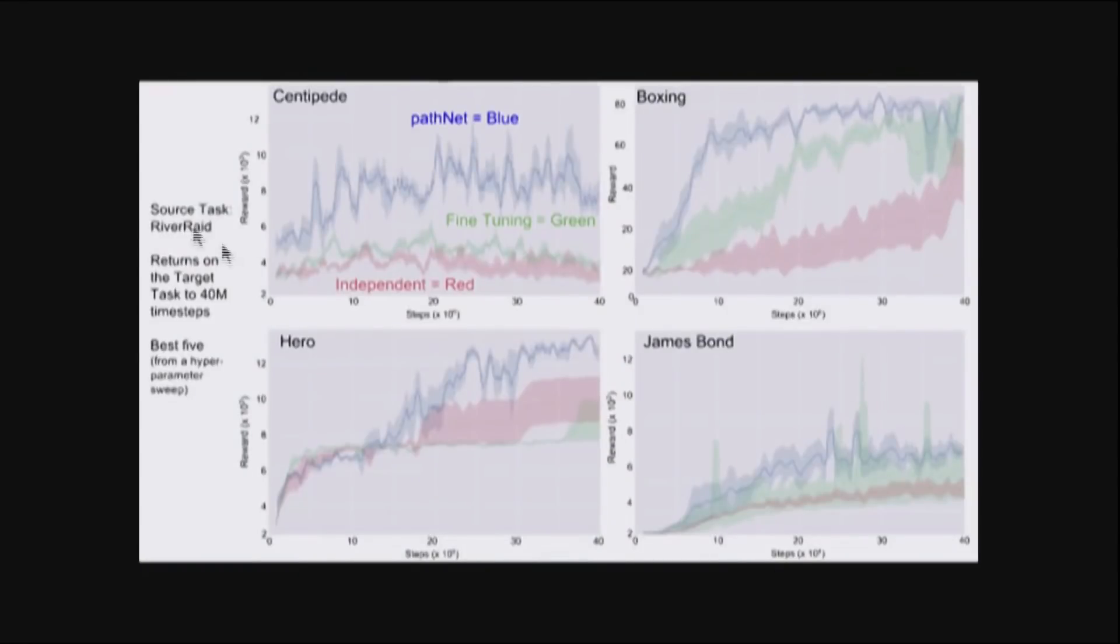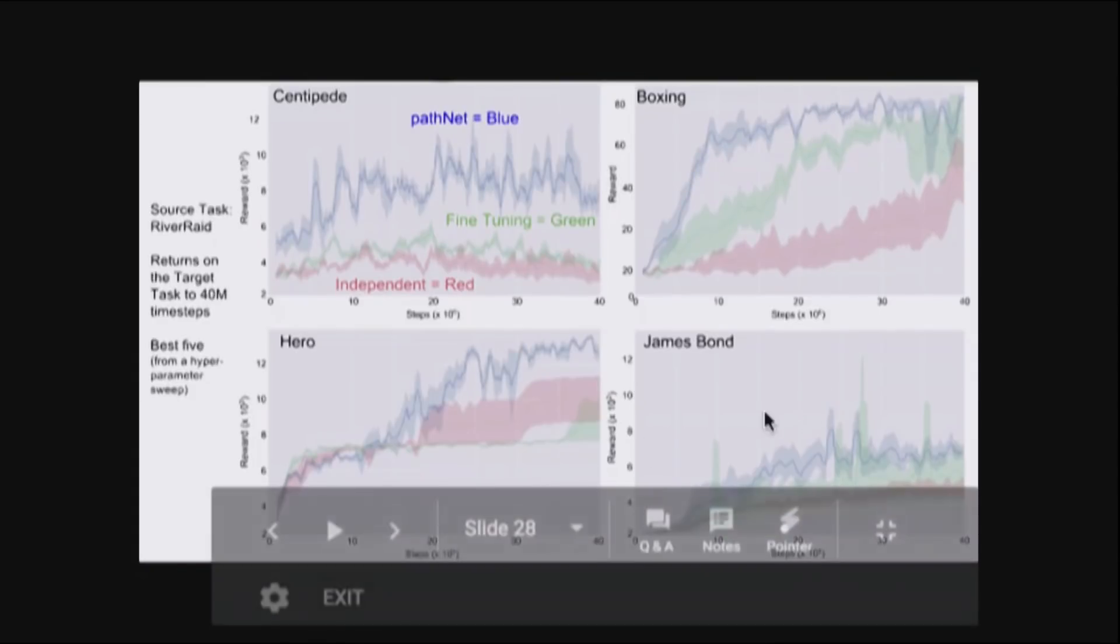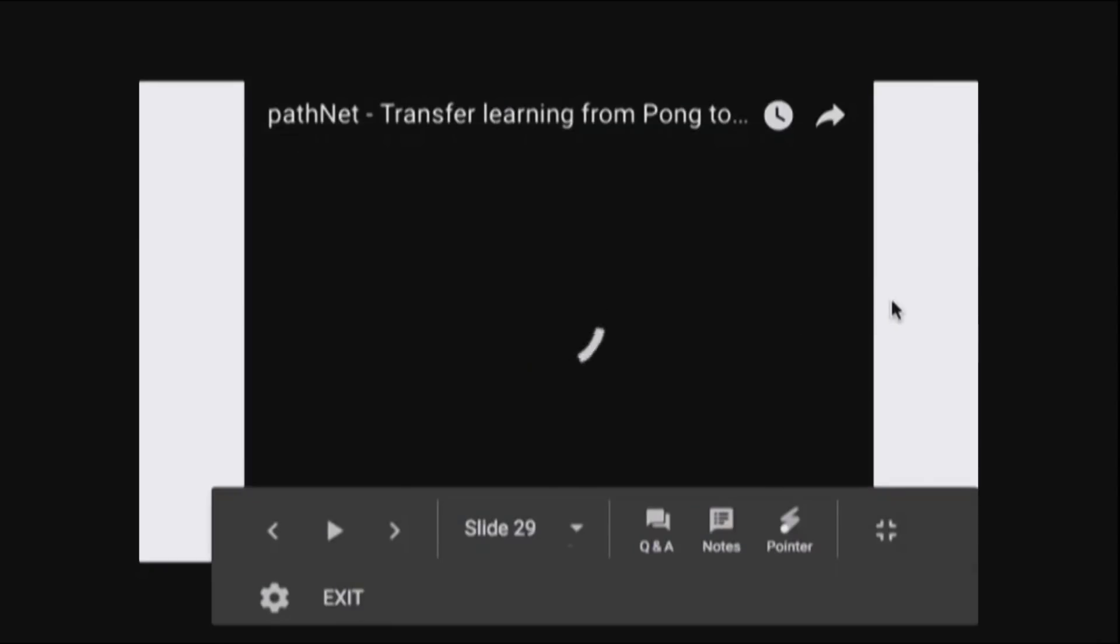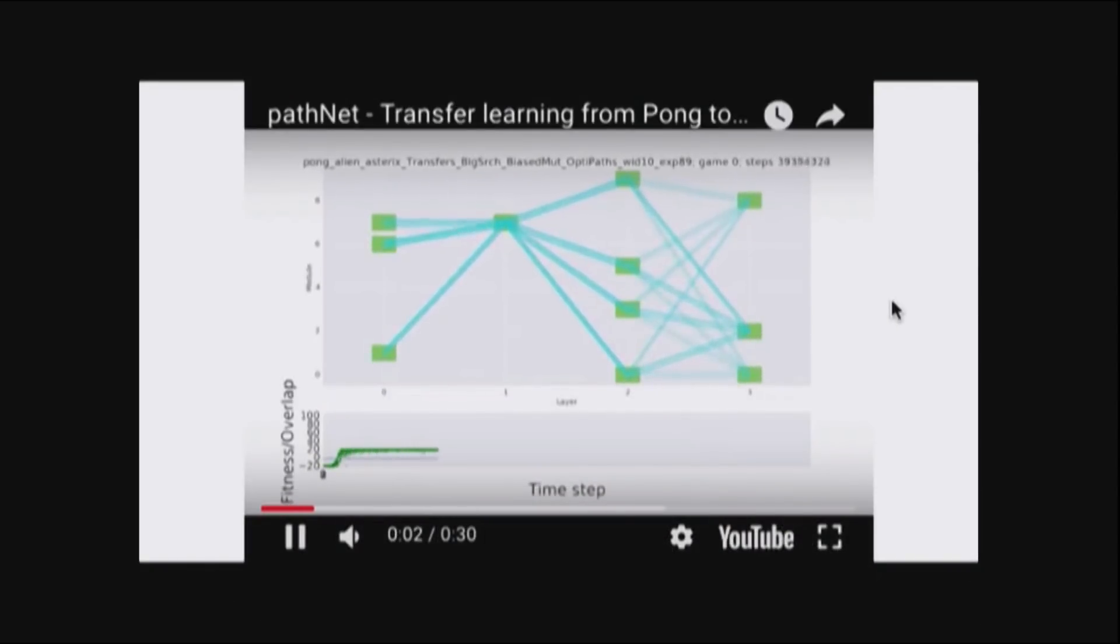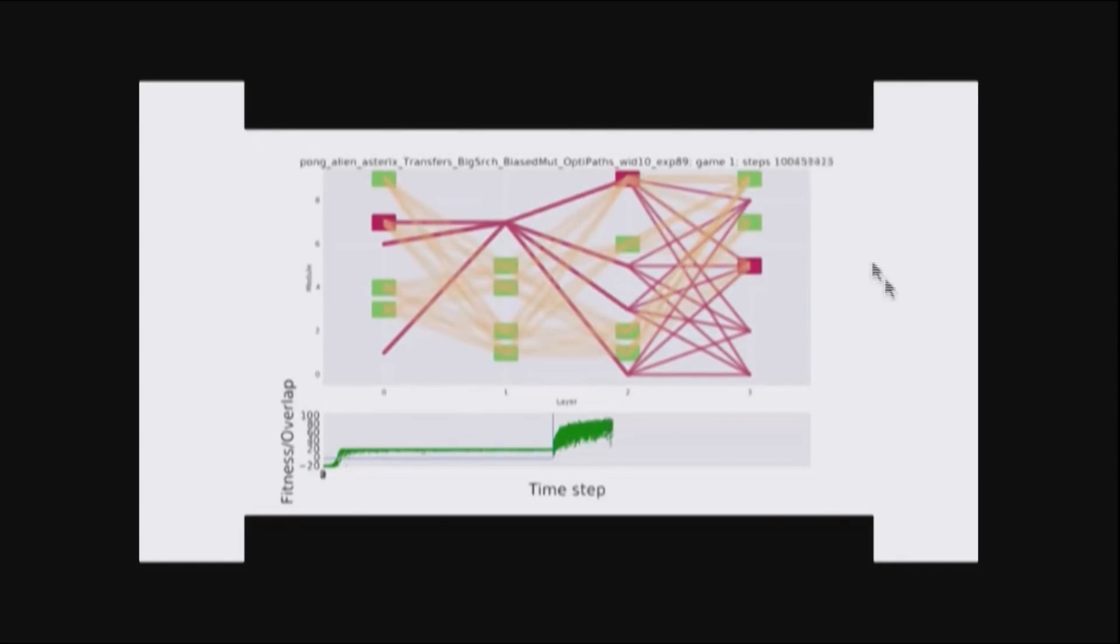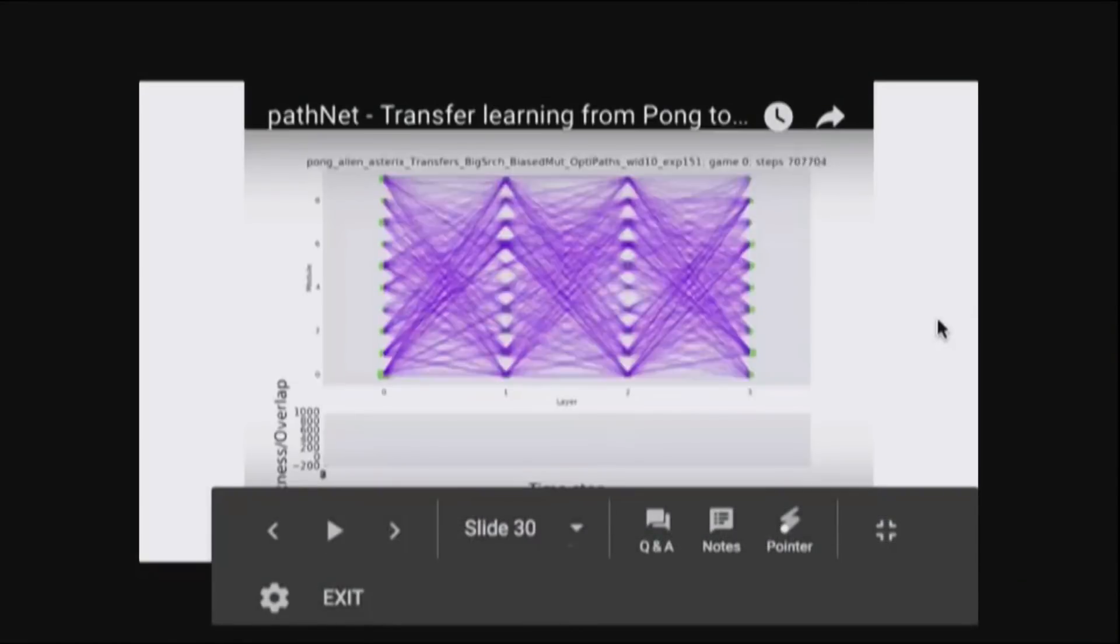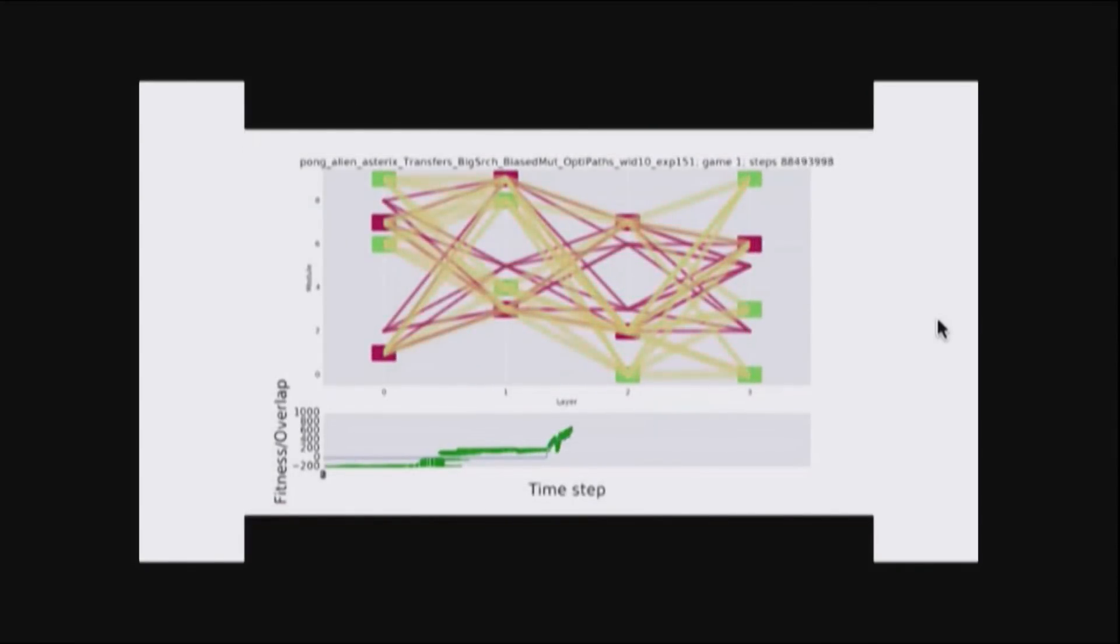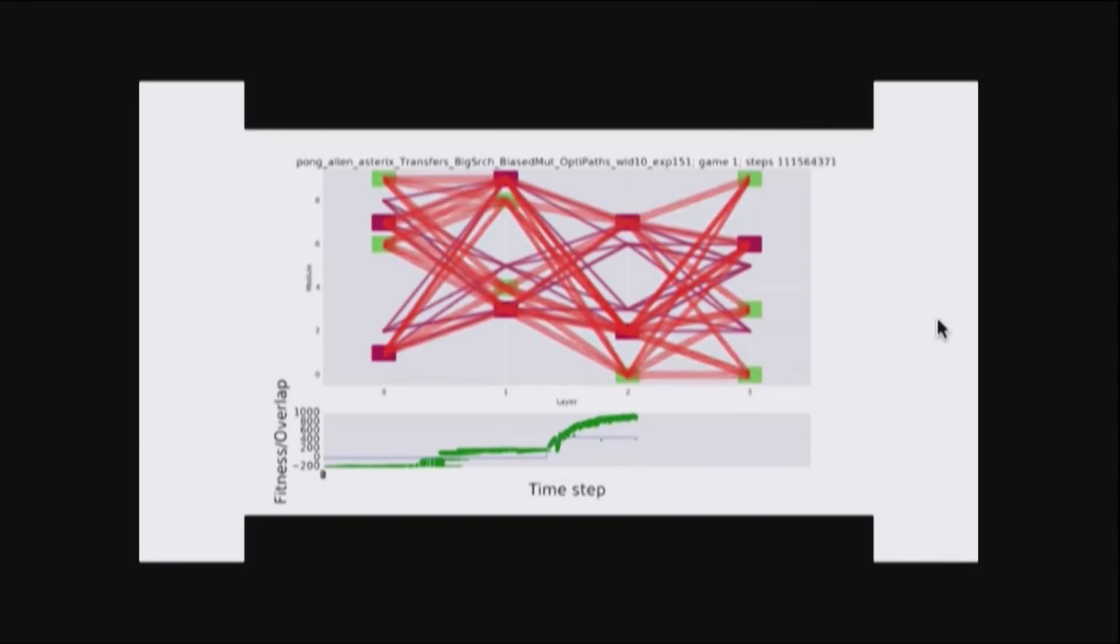We find that, for example, if we start the source game as Riverade, PathNet shows better performance on the range of games that we tried than both the fine-tuning and the independent controls. Here's a video of the transfer task. The pathways rapidly converge to one path. And then we flip to the next game. And very rapidly, the pathways converge with reuse of these red modules. So for Rinaldo, here's another run. Convergence, random initialization of new pathways. All the parameters are just one shared set of parameters. Pathways are just views.